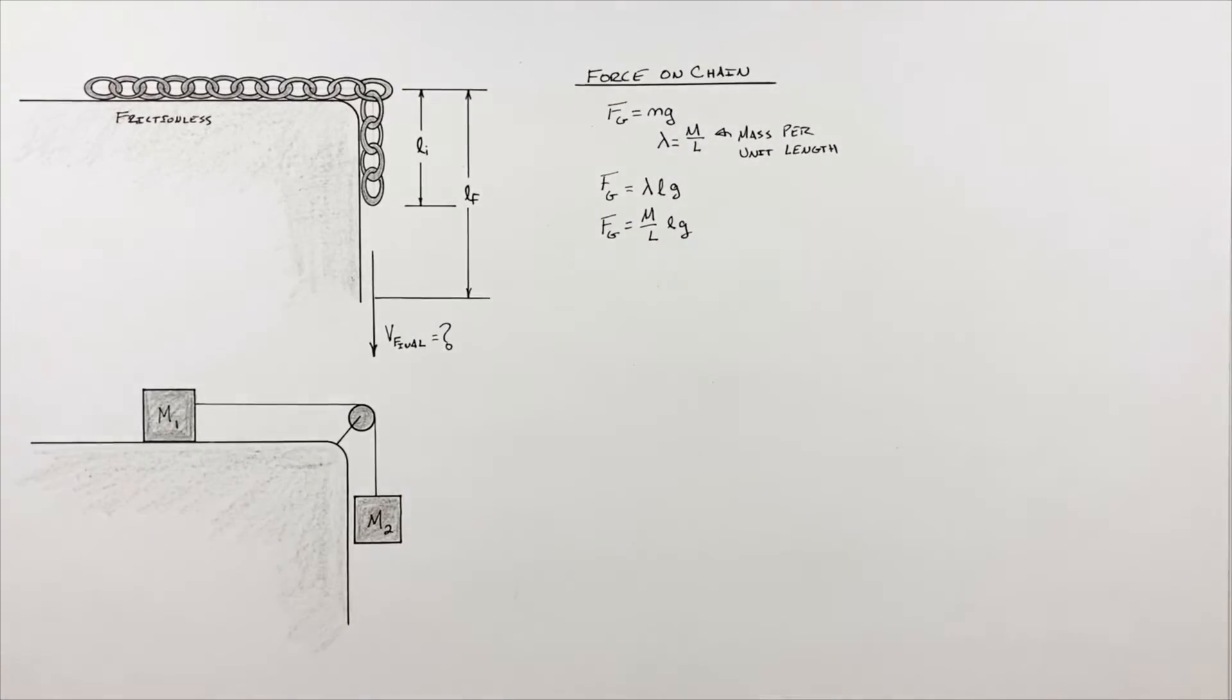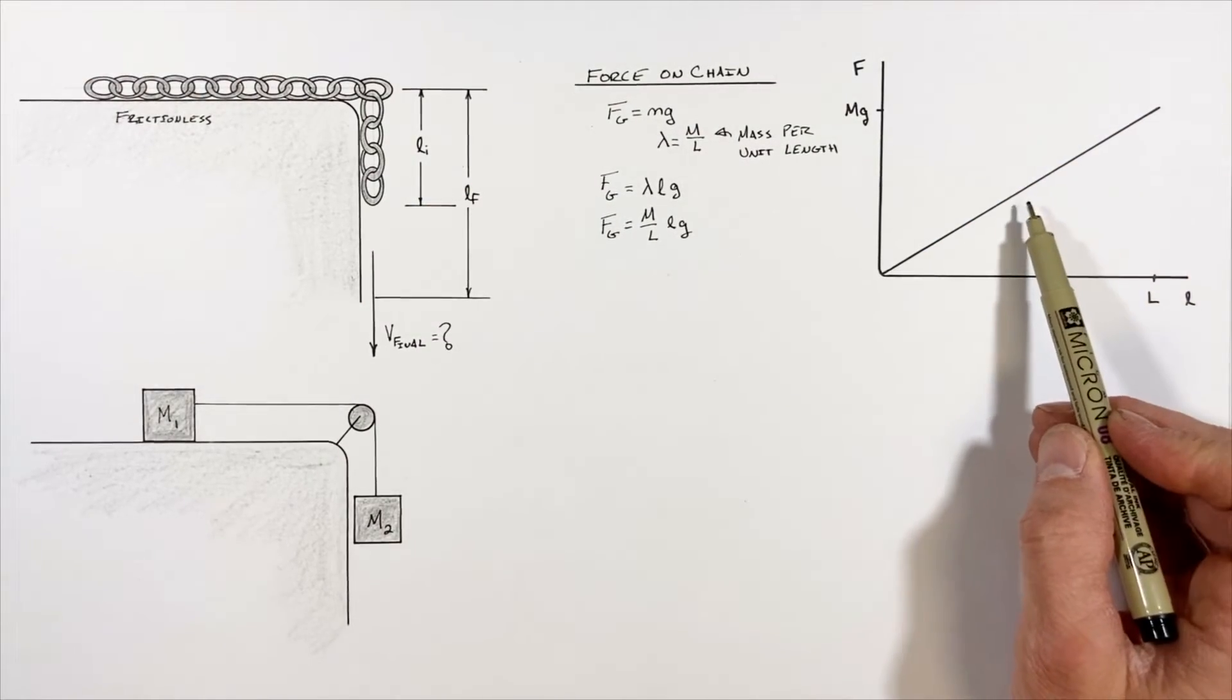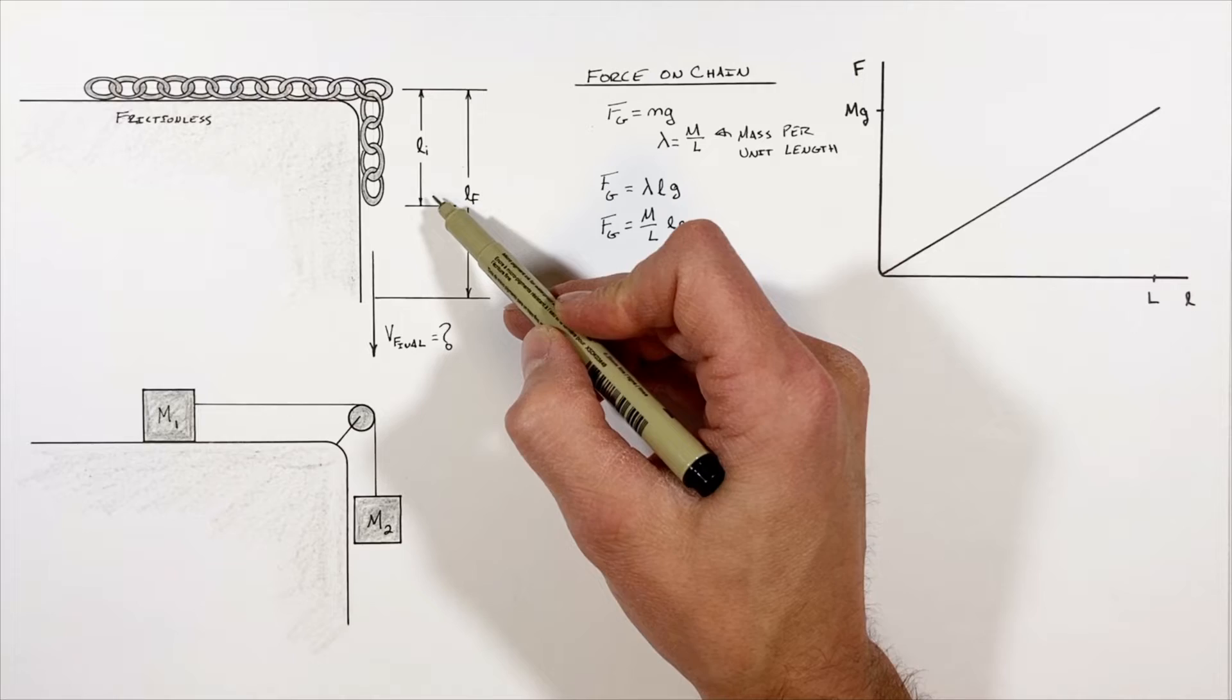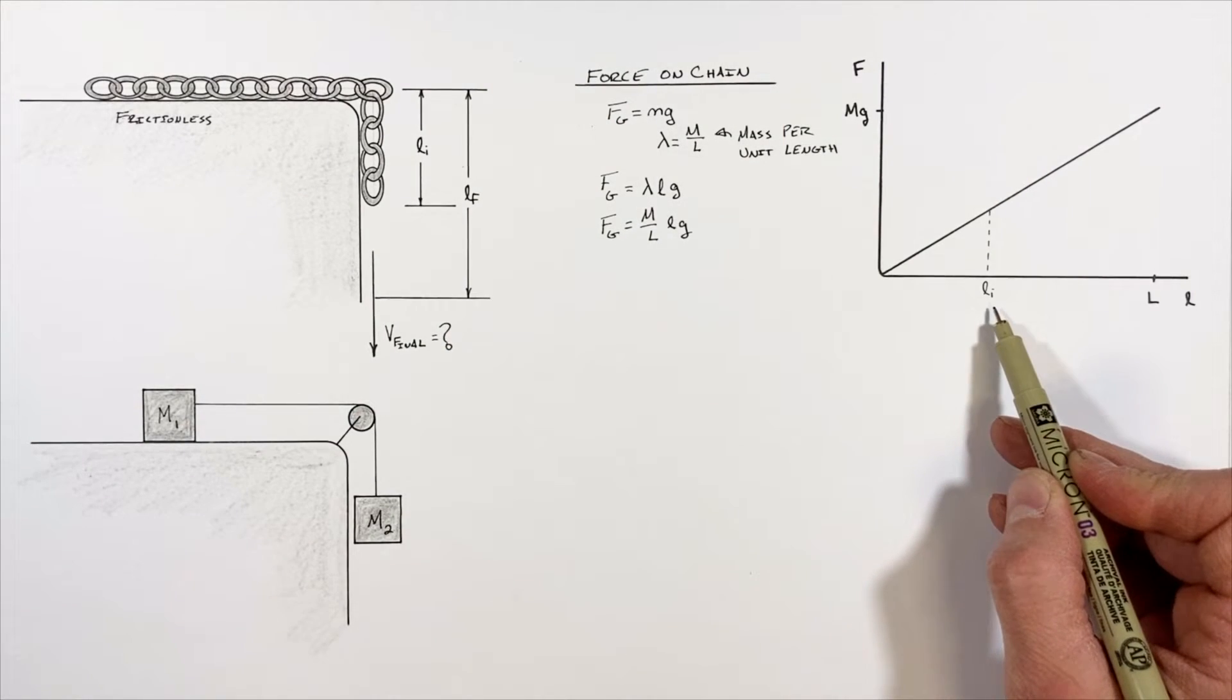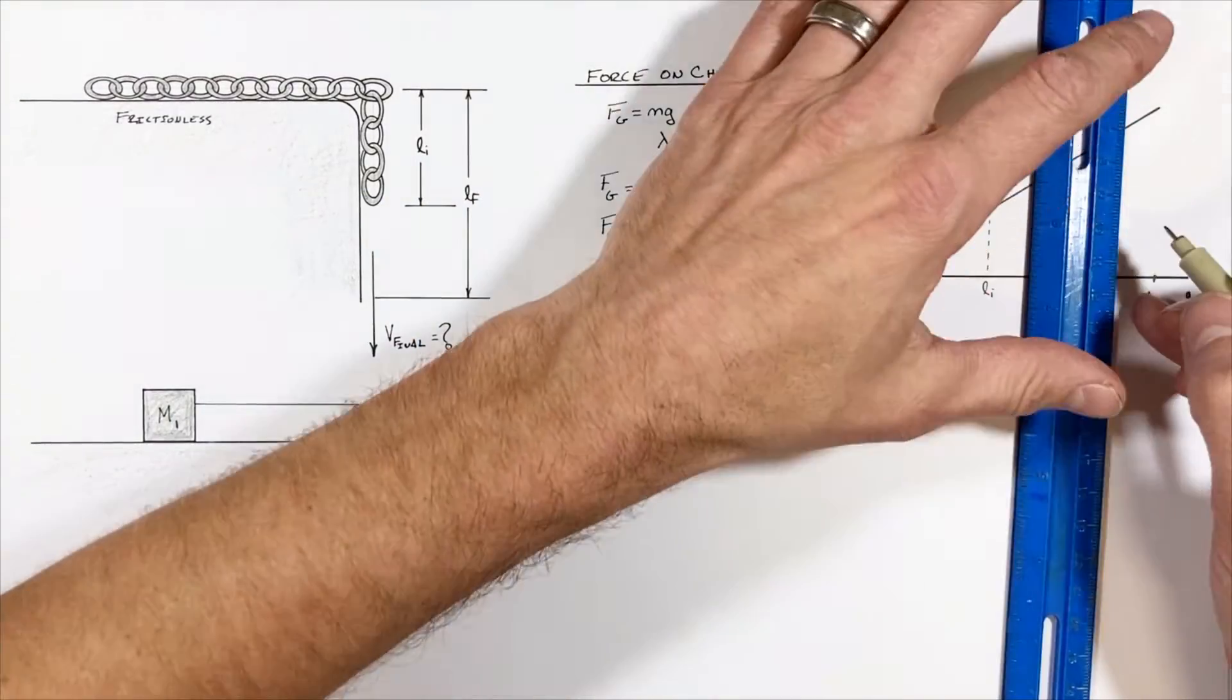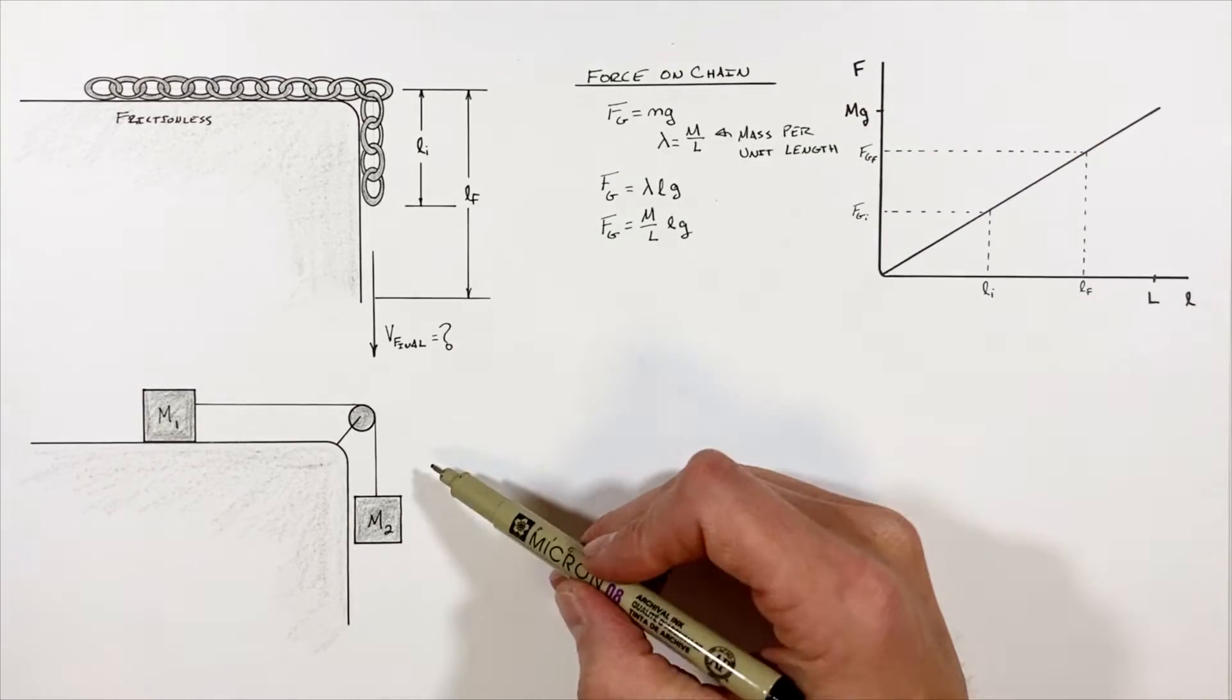So let's take a look at the graph of this function. We see this function is simply a linear trend which has a slope of mg over L. So when there's this small length of chain hanging off the edge of the table, there's going to be a small force by gravity on the chain. But as more and more chain hangs off the edge of the table, that force by gravity is going to increase.